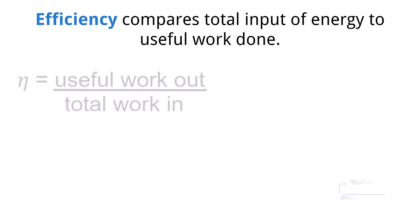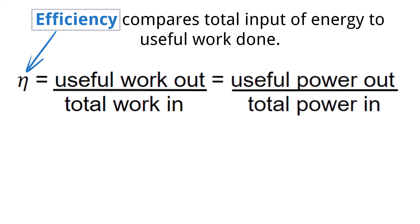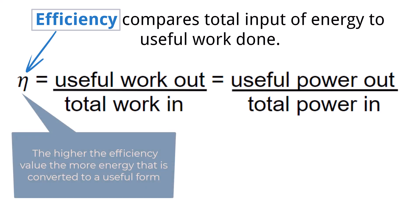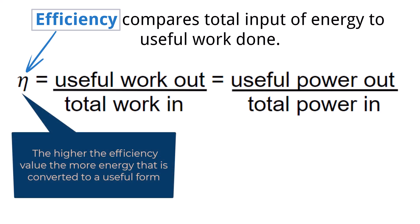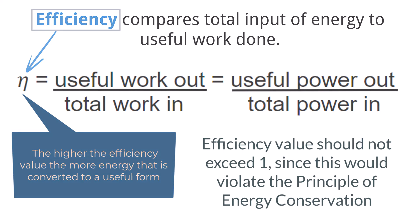Energy is not always converted into useful purposes. Some energy is lost in forms like heat and vibration. Efficiency is a measure of how much of the input energy is converted to useful energy. To make this calculation, divide the amount of useful energy out by the total energy input. This calculation also applies to power efficiency as well. The higher the efficiency value, the more energy that is converted to a useful form. Importantly, the efficiency value should not exceed 1. An efficiency greater than 1 would mean that the process you are evaluating is creating energy, which violates the principle of conservation of energy which we have previously covered.